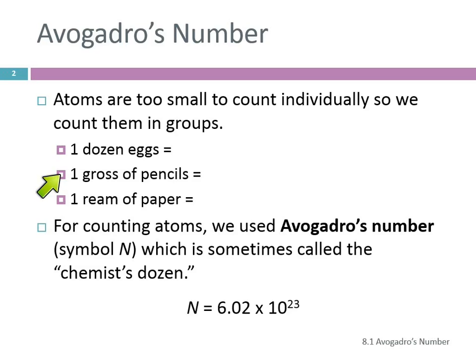Another unit like this that's a counting group is 'gross.' Does anybody know what a gross is? 144. It's a dozen dozen — 12 times 12. So a gross of pencils is 144 pencils.